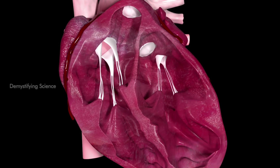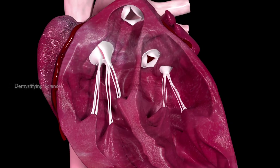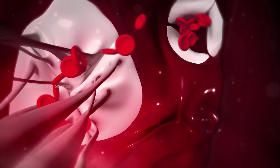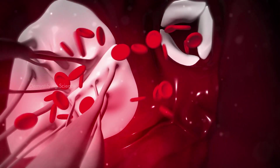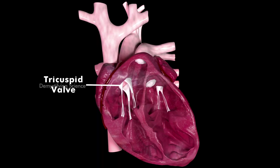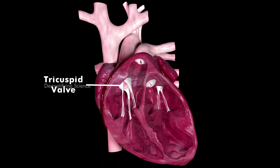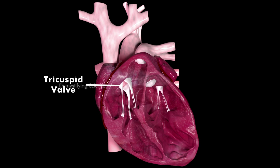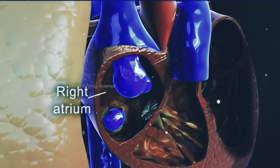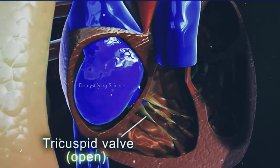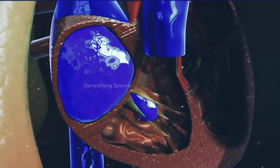Each chamber of the heart is separated by valves that only permit blood to flow in one direction. The tricuspid valve is located between the right atrium and right ventricle, and it opens due to a buildup of pressure in the right atrium.